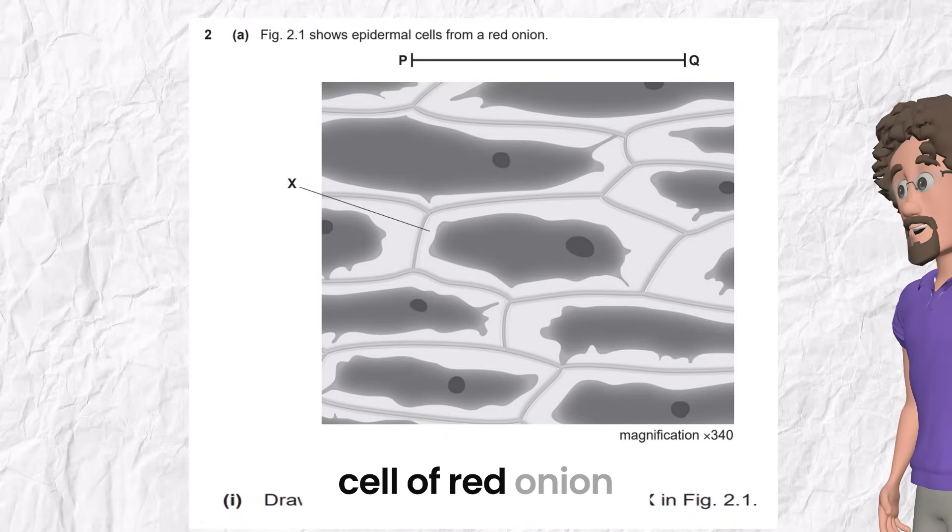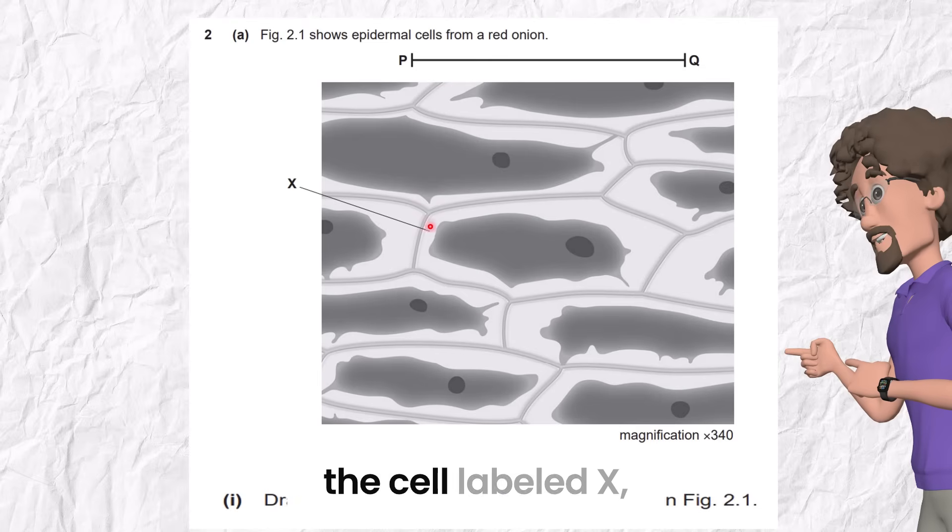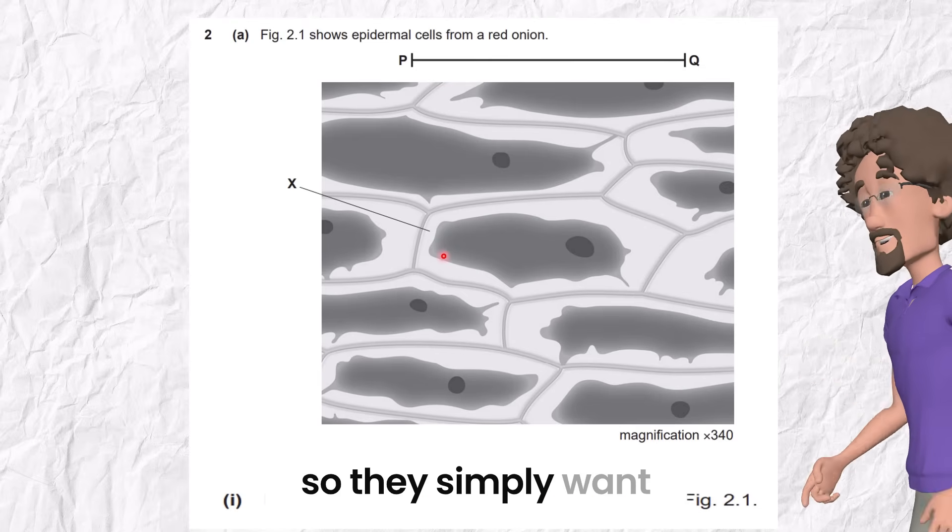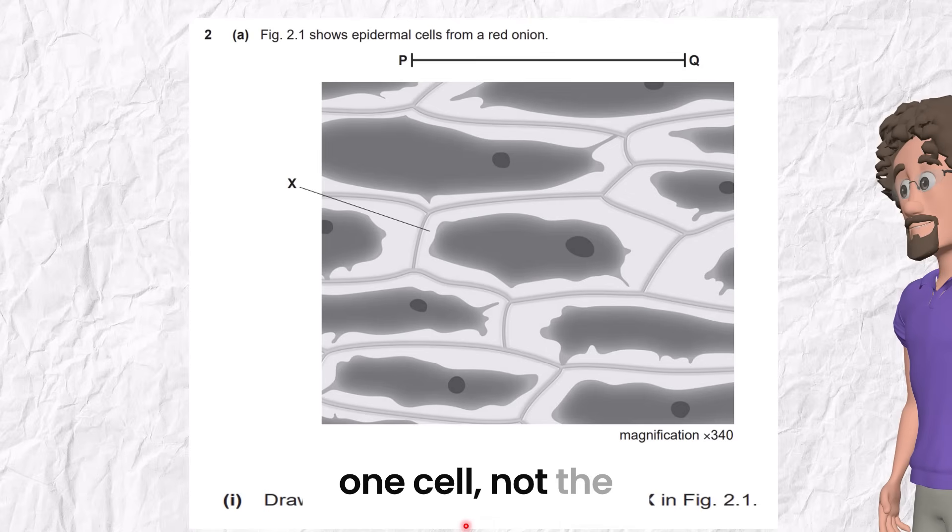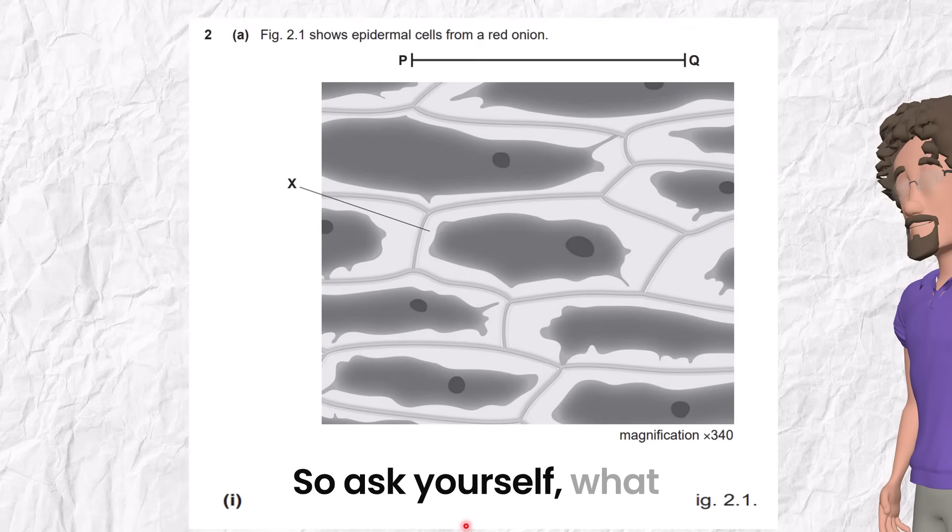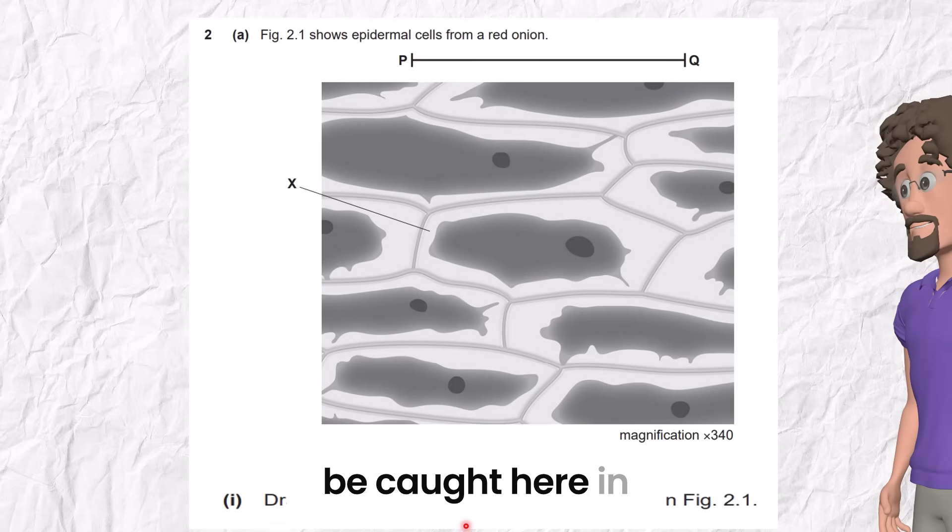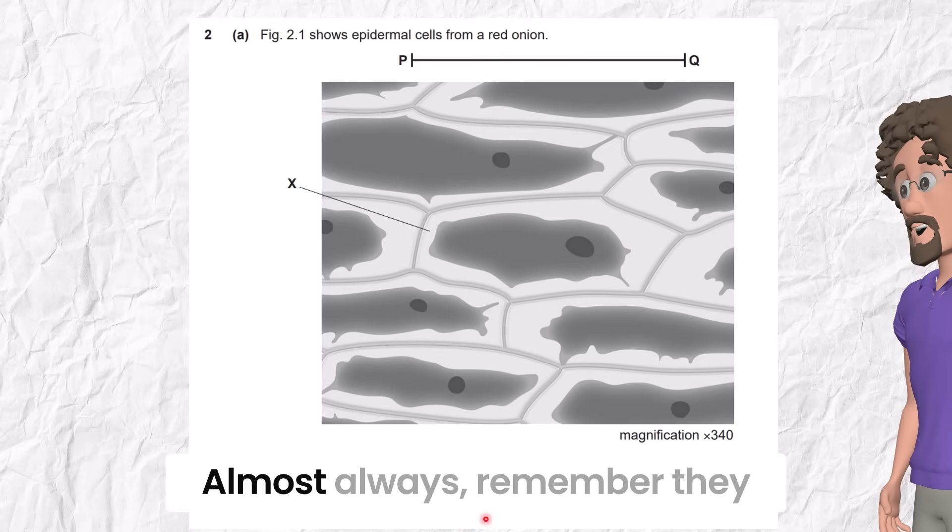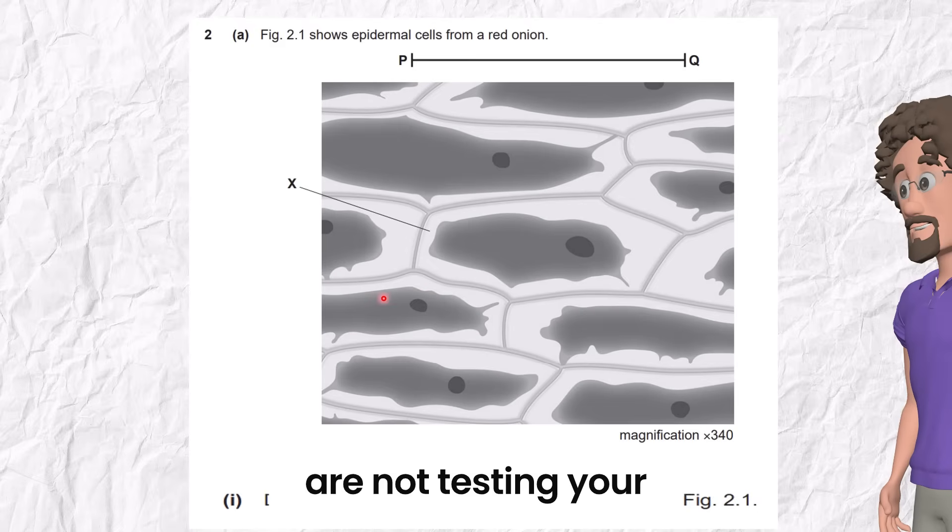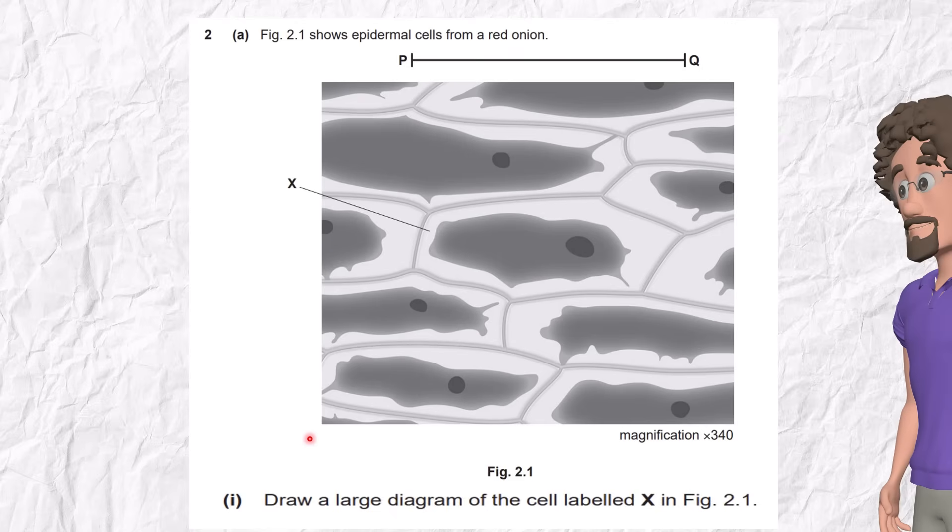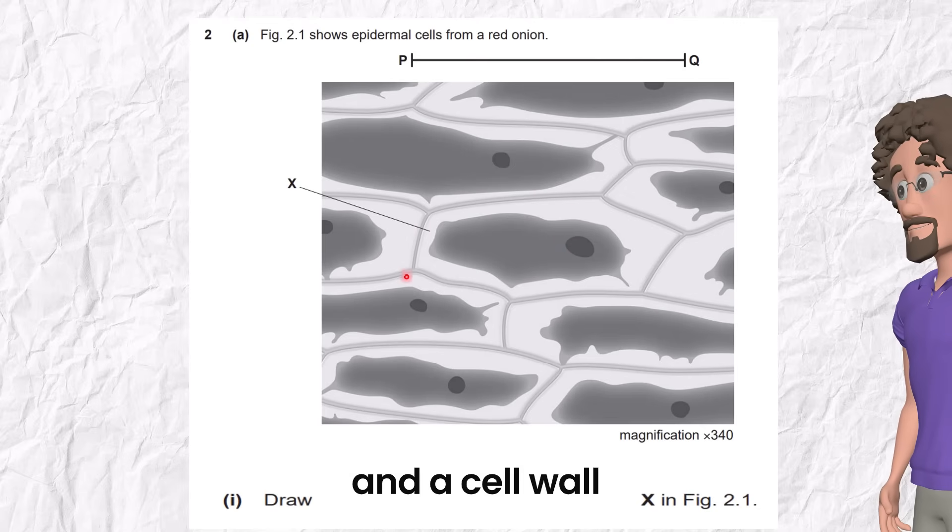This is an epidermal cell of red onion. They asked to draw the cell labeled X. So they simply want me to draw only one cell, not the whole tissue. No labels. So ask yourself, what detail is expected to be caught here in that photo? Almost always, remember they are not testing your art. They test your observation and your drawing accuracy. Now what do you see in cell X? There is a nucleus and a cell wall.